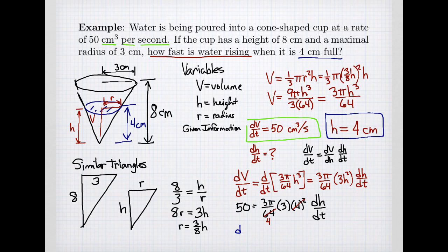Let's change color accidentally, dh dt is 50 times 4 divided by 9 pi. So that's 200 over 9 pi. And that is a rate of change in height, so that is centimeters per second.